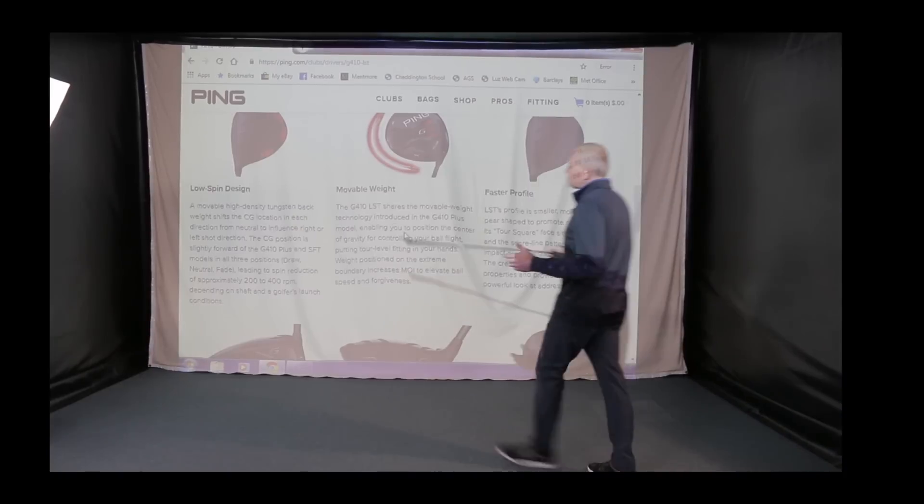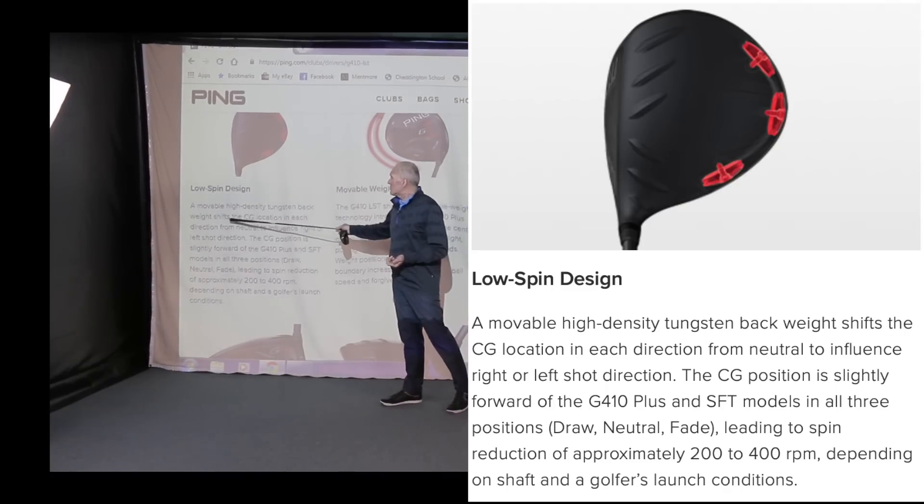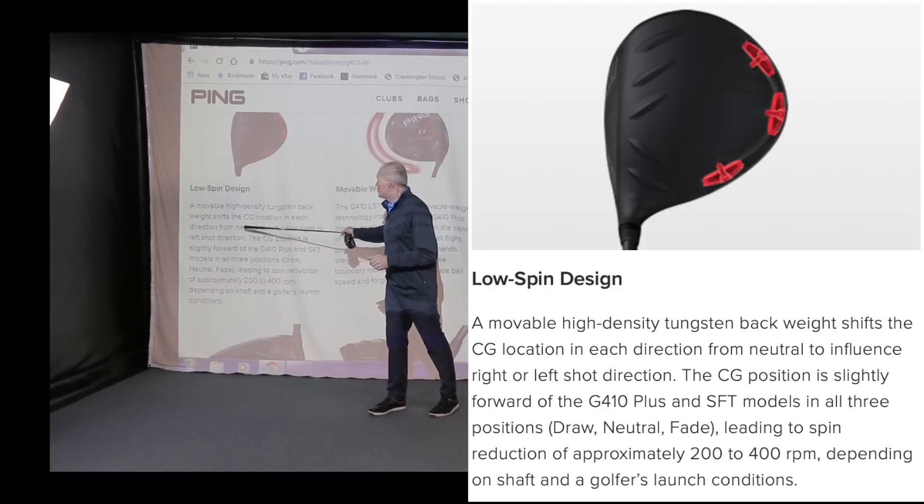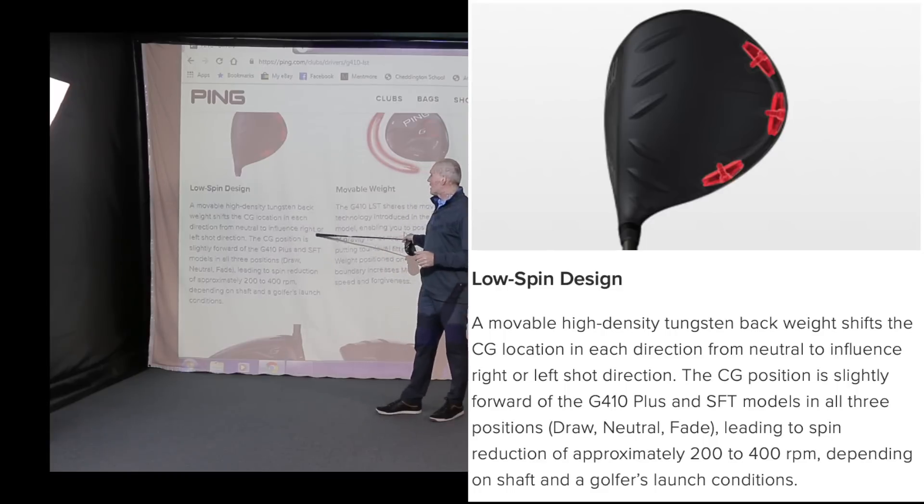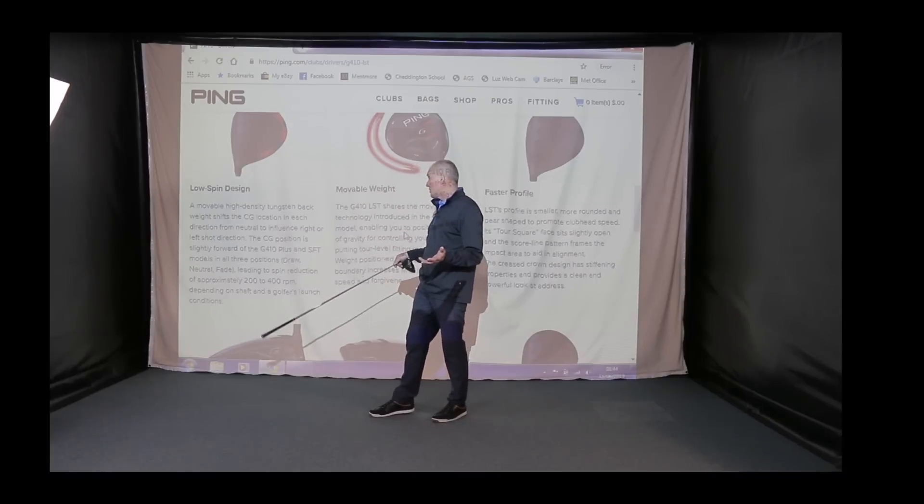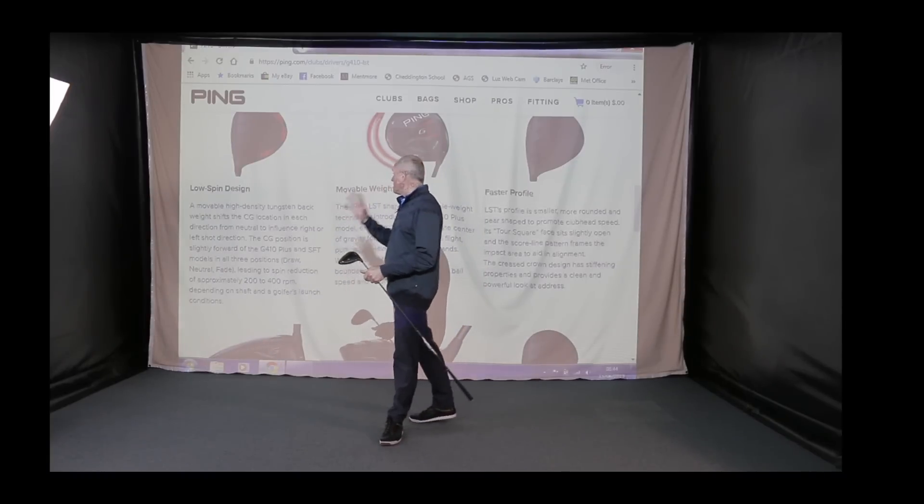I just want to scroll down onto another graphic just to show you. So this low-spin design is a movable high-density tungsten back weight. So it shifts the CG (center of gravity) location in each direction from neutral to influence right or left shot direction. The CG position is slightly forward of the G410 Plus and the SFT models in all three positions: draw, neutral, and fade, leading to spin reduction approximately 200 to 400 rpm, dependent on the shaft and the golfer's launch conditions.